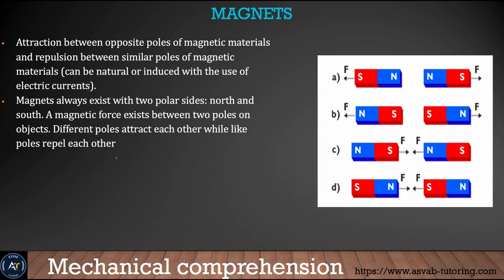The last topic is magnets. The property of magnets is that same poles repel each other, while opposite poles attract each other. Make sure you understand what happens when two magnets come together — that is a basic concept you need to know. Watch the video multiple times, take notes, and download the application from the link below to practice. Good luck.